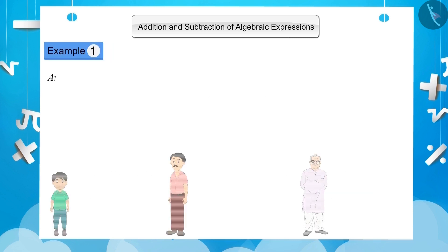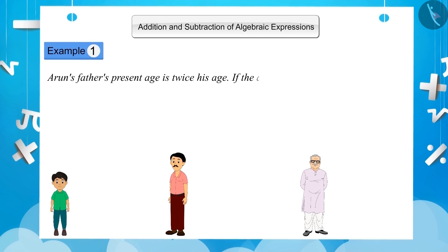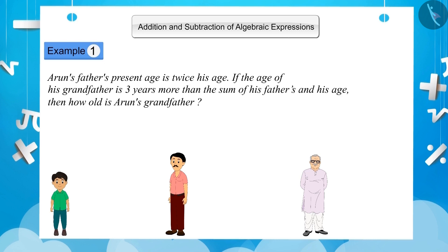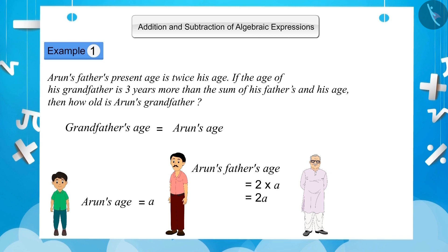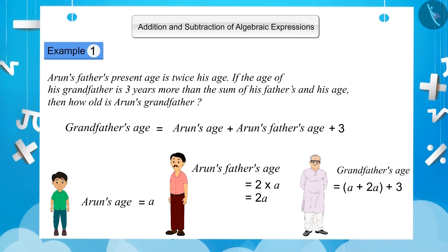Example 1. Arun's father's present age is twice Arun's age. If the age of Arun's grandfather is 3 years more than the sum of Arun's and his father's age, then how old is Arun's grandfather? Suppose Arun's age is 'a' years. So Arun's father's age is equal to 2 times a, which is equal to 2a. Grandfather's age equals Arun's age plus Arun's father's age plus 3, which is equal to a plus 2a plus 3.